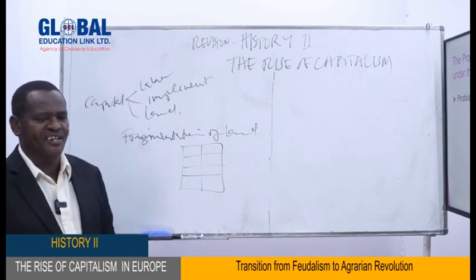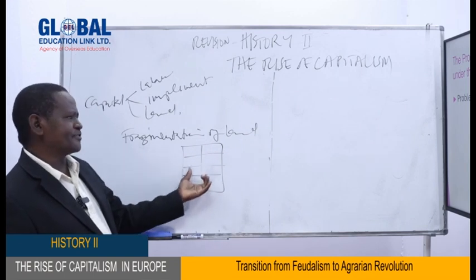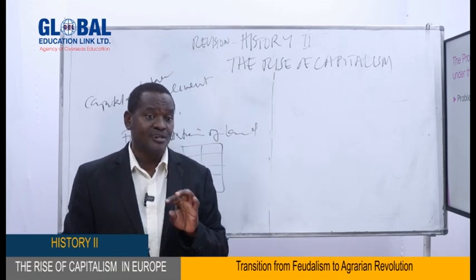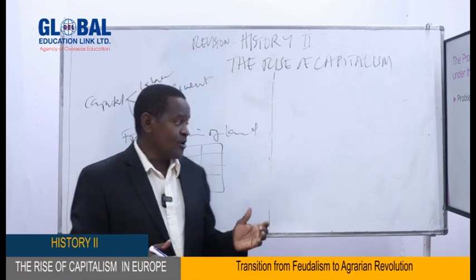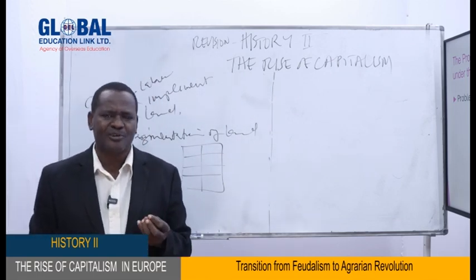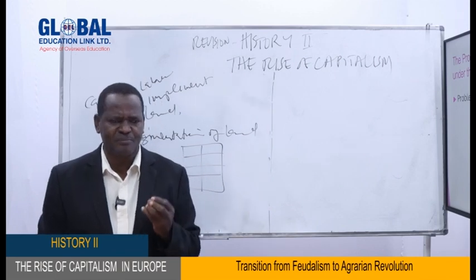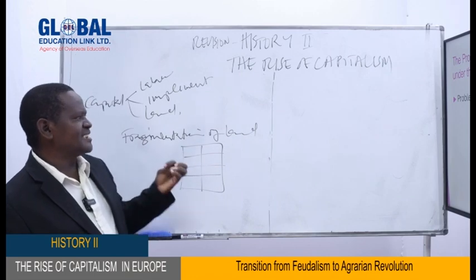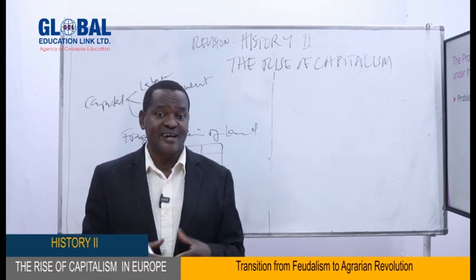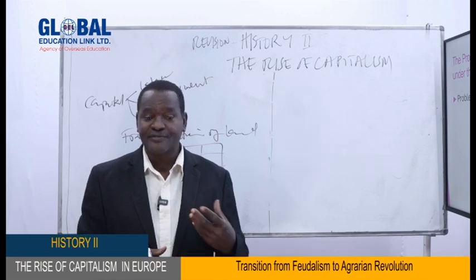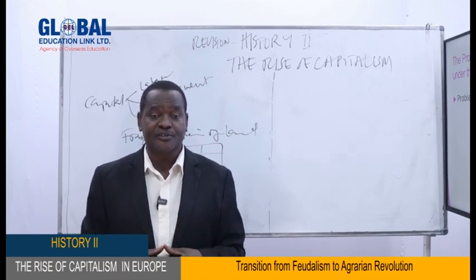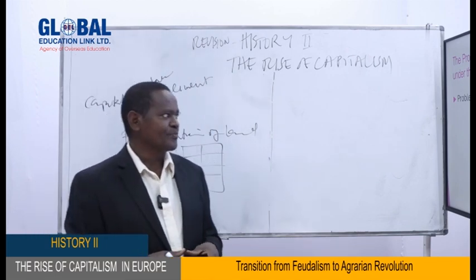Land fragmentation also created serious social conflict. People kept animals outdoors and had to pass through other people's farms daily to reach pastures. Animals could eat other people's crops, leading to disputes. This is similar to what we experienced in parts of Tanzania, such as Kilosa, where there was fighting between pastoralists and farmers because cattle would enter other people's farms. This system of unenclosed, fragmented land created ongoing conflict throughout Europe at that time.